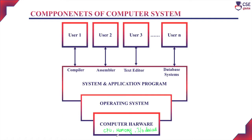Looking at this abstract view of the components of a computer system, at the base we have computer hardware. The hardware components are processor, memory, IO devices, etc. These are all the resources of the computer system.